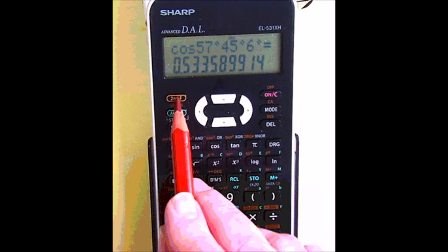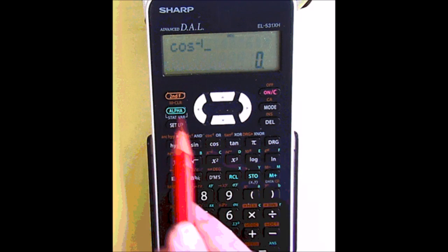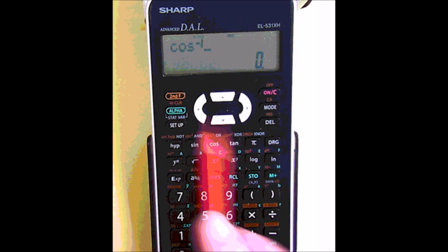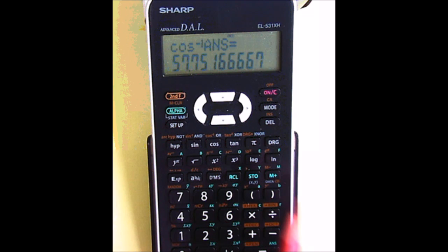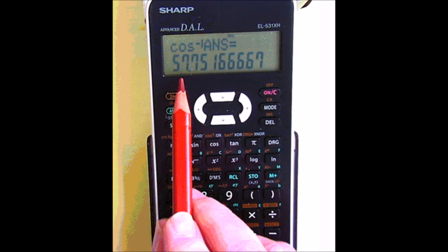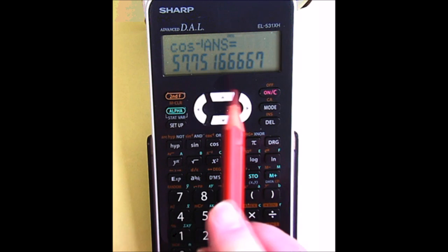Now if I wanted to change that back into the angle, I'd have to use the second function and then cosine of that answer. I'd have to press alpha and then equals to get the last answer. The answer here is not in degrees, minutes, and seconds. It's in fact in degrees only: 57.75 degrees.